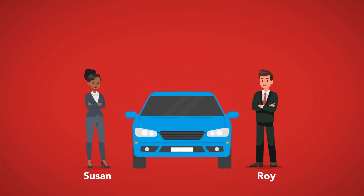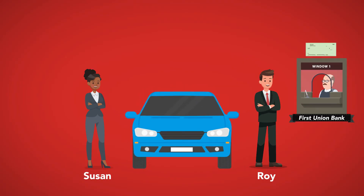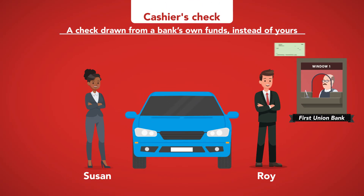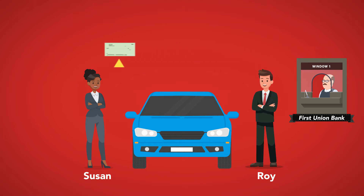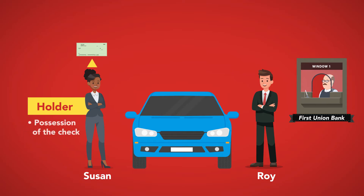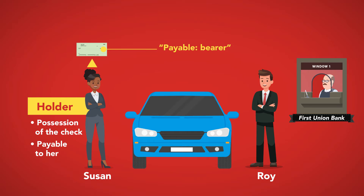For example, assume that Roy wants to buy a car from Susan. He goes to his bank and gets a check that the bank draws on his own account, called a cashier's check made payable to Susan. Roy is in possession of the check, but since the check is payable to Susan, Roy cannot be a holder of the check. Susan is not a holder either until Roy gives her the check. Once Roy gives Susan the check, she becomes a holder because she is in possession of the check and it is payable to her.